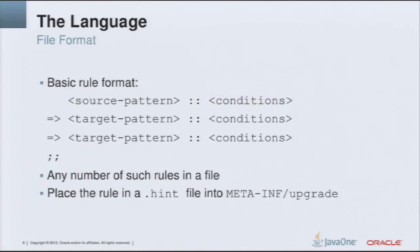Now let me talk about the language in which we can declare the refactorings or declare the checker for the anti-pattern. The file that contains the rules can contain any number of rules that look like this, which basically consists of two main parts. One is the source pattern — the piece of code we are looking for. Then there can be any number of target patterns, meaning the target of the transformation — the new code we would like to see in the source code instead of the old one. In this presentation, we will mostly focus on the first part only.